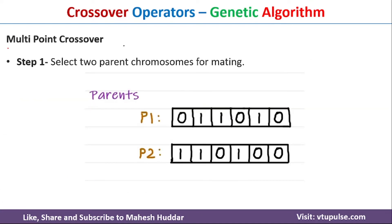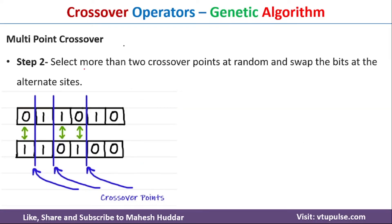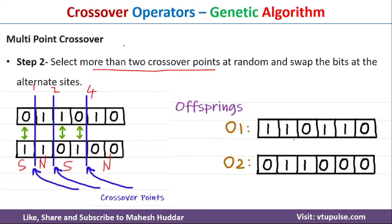The third crossover operator is multipoint crossover. We select two parents P1 and P2, then select more than two crossover points — in this case at positions 1, 2, and 4. We swap the bits at alternate sites: starting from the first site before crossover point 1, we swap those bits, skip the next segment, swap the following site, and skip the last bit. Once the genes are swapped, we get new offspring O1 and O2.